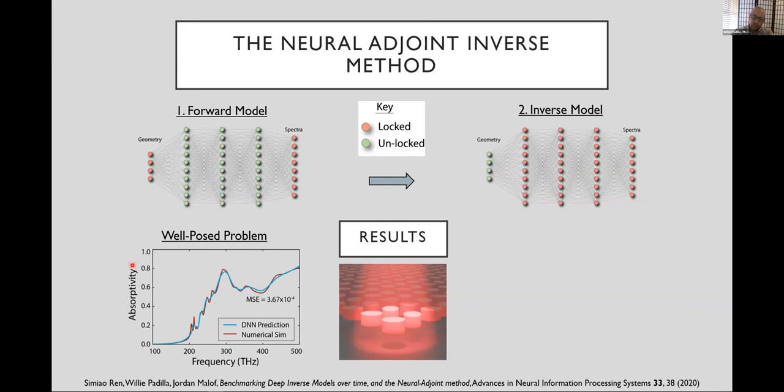So a well-posed problem that we solved is to then say, well, let's ask our neural adjoint method, as we're calling it, to find this red curve here. And it's well-posed because we know that this spectra exists within our data set, and so indeed when we put it into this using this algorithm here, we result and we get this blue curve. As you can see, the MSE is quite good. It's about 3.7 times 10 to the minus 4. Again, this is going from 0 to 1, so this is a decent match.